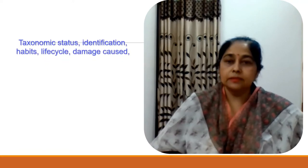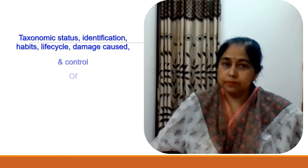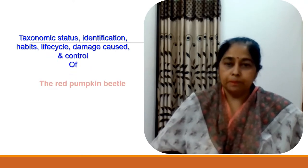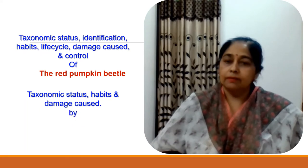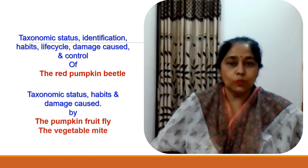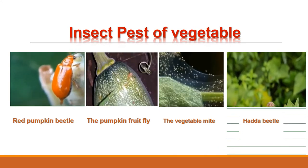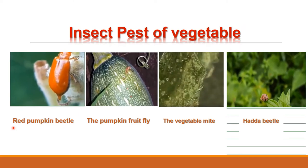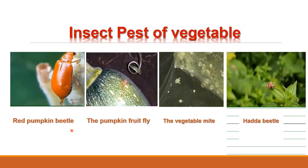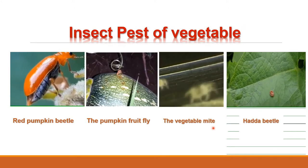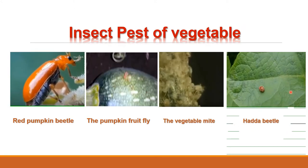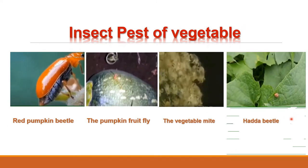After completing this chapter, you will be able to know about taxonomic status, identification, habits, life cycle, damage caused and control of the red pumpkin beetle, and also about taxonomic status, habits and damage caused by the pumpkin fruit fly, vegetable mite and Hadda beetle. The four important pests of vegetables we are going to study today are the red pumpkin beetle, pumpkin fruit fly, vegetable mite and Hadda beetle.